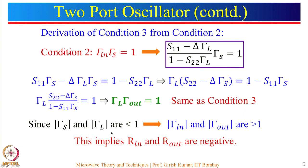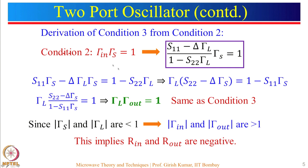For given source and load impedances, gamma_s and gamma_L will always be less than 1 — recall that on the Smith chart we can locate all real and imaginary impedance values, and gammas on the Smith chart are always less than 1. If gamma_s is less than 1, then gamma_n will be greater than 1. Similarly, if gamma_L is less than 1, then gamma_out will be greater than 1. Either of these conditions implies that R_in and R_out are negative.